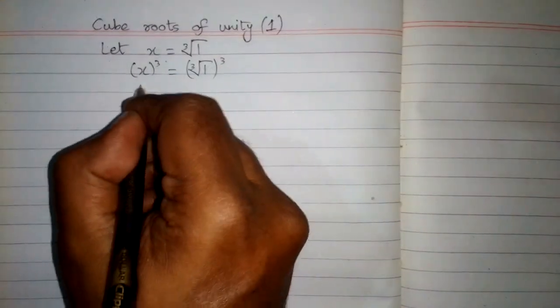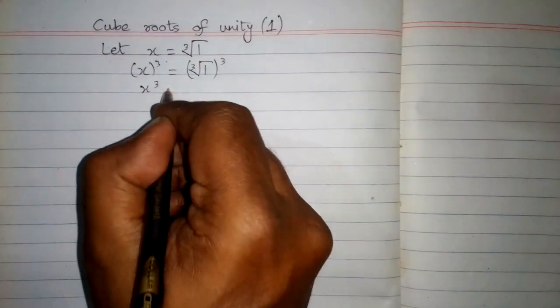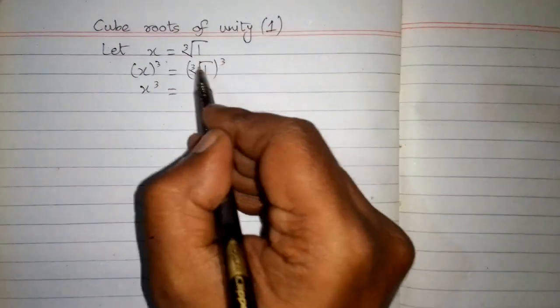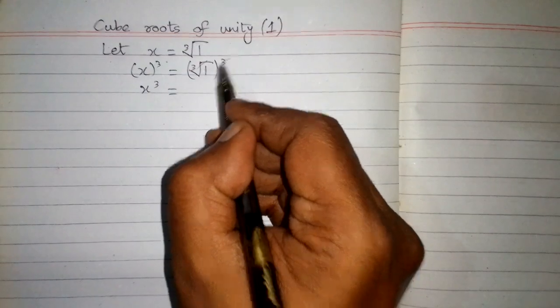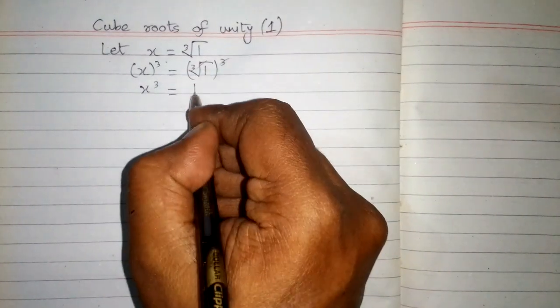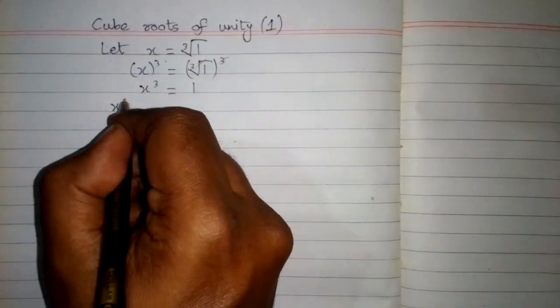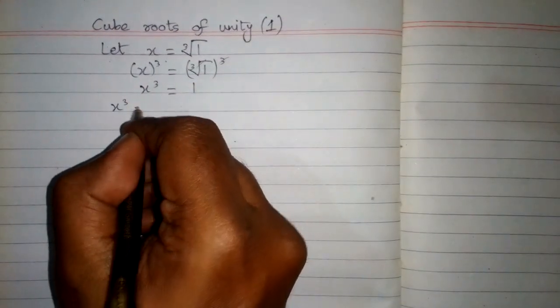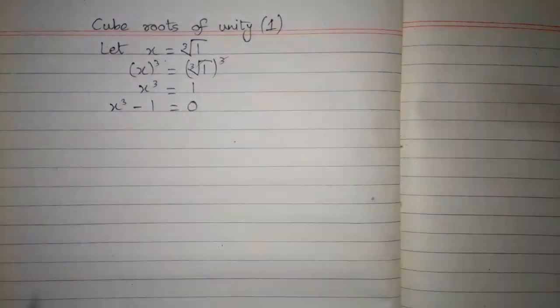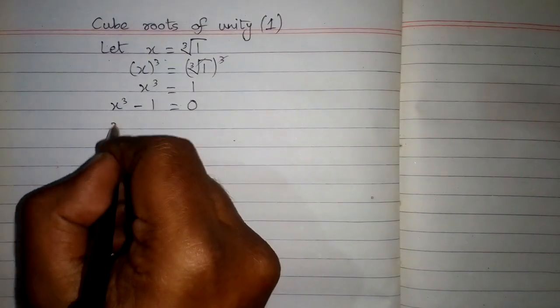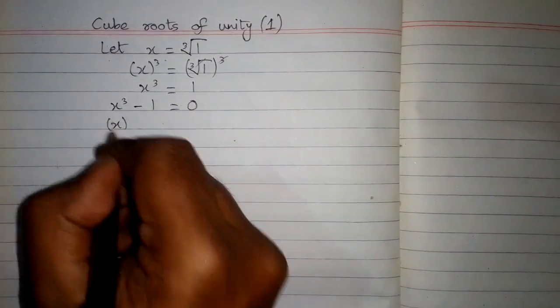So we have x cubed, and the cube root and cube will be cancelled, giving us 1. This equation can be written as x cubed minus 1 is equal to 0.